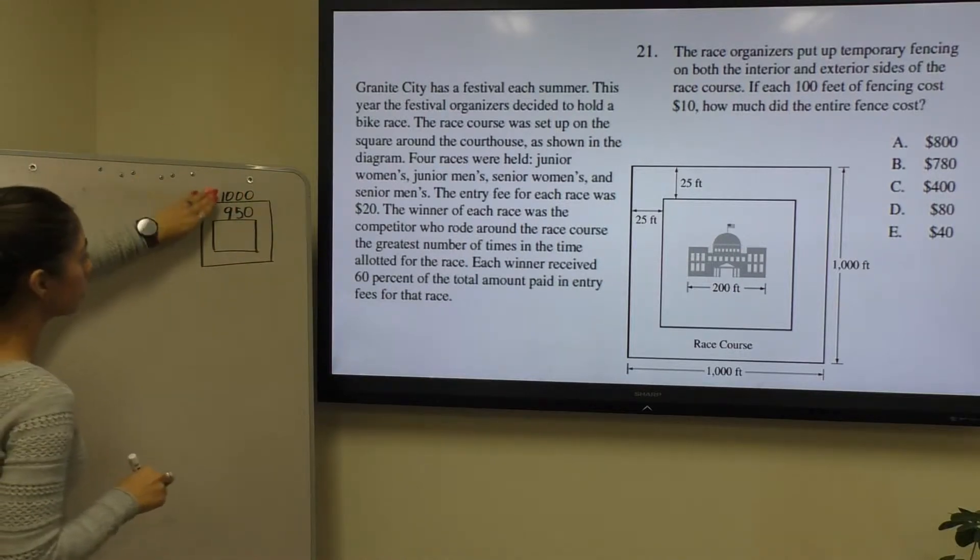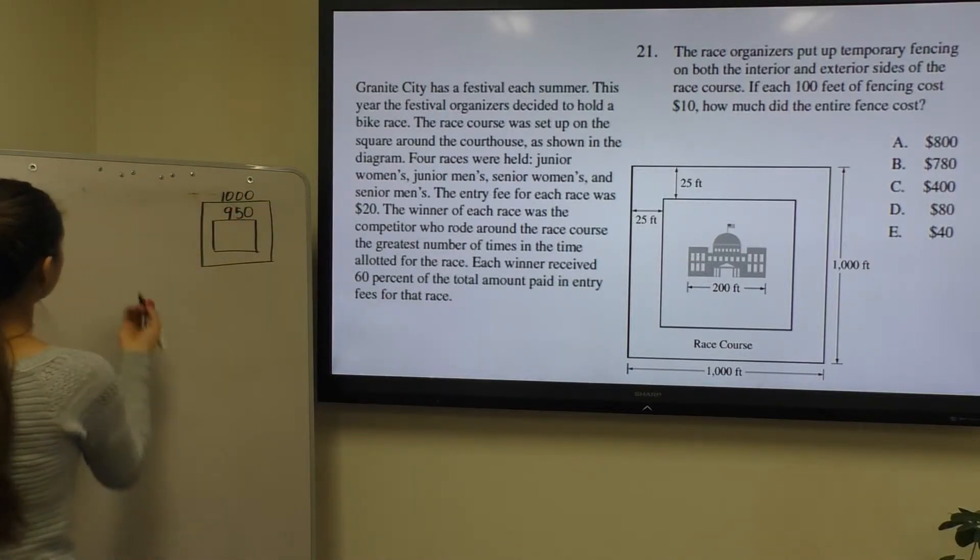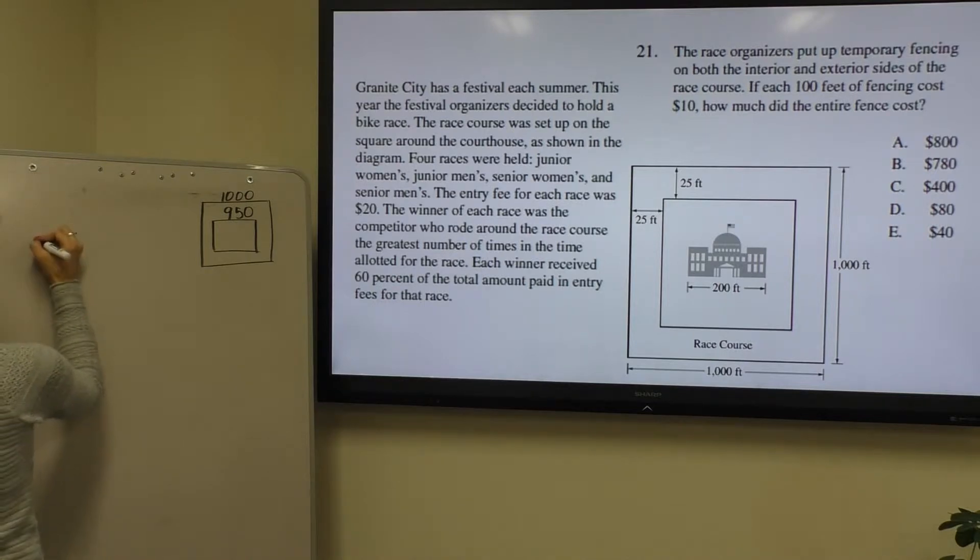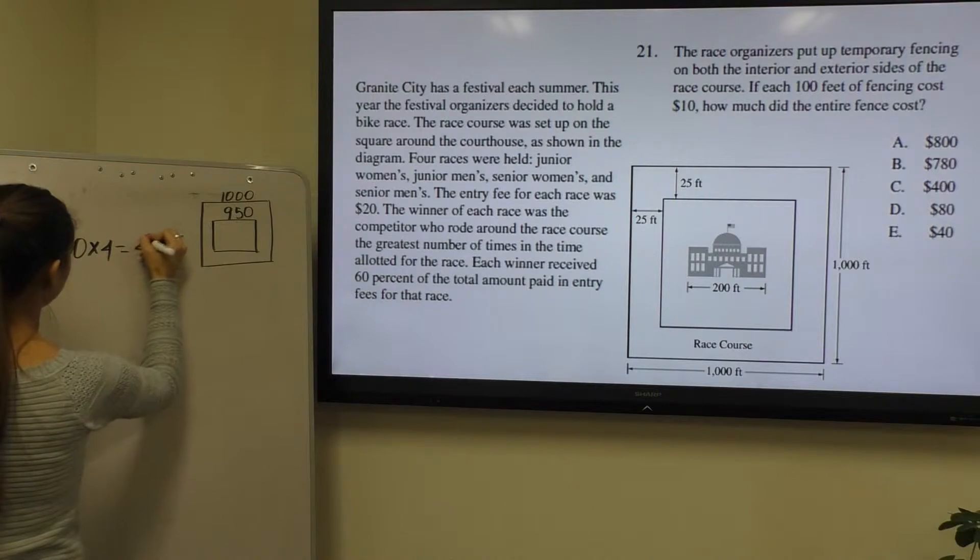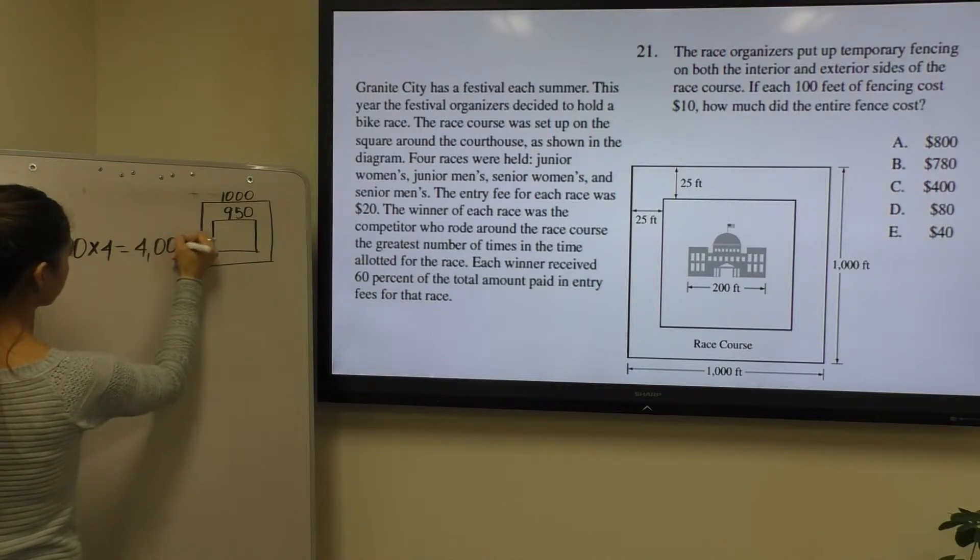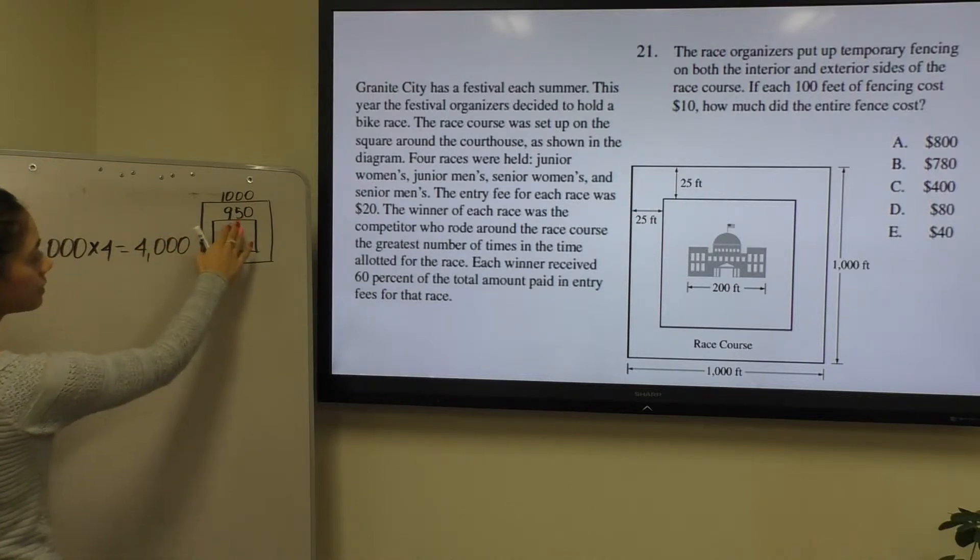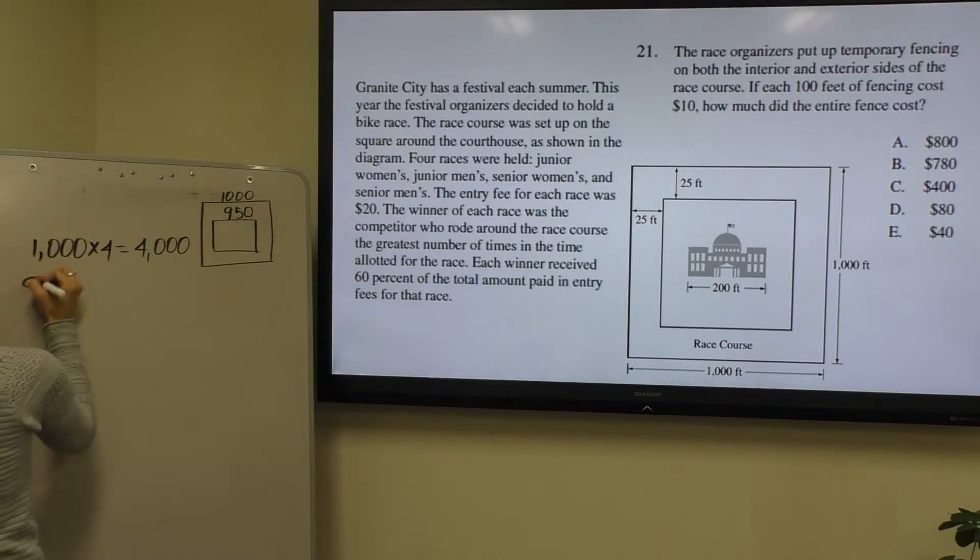Fencing was done on the large square and the small square, so we can calculate the amount of fencing for the large square to be 1000 times 4, and that would give us a total of 4000.